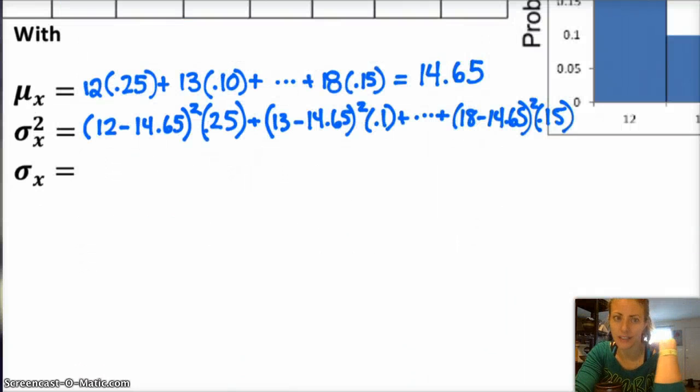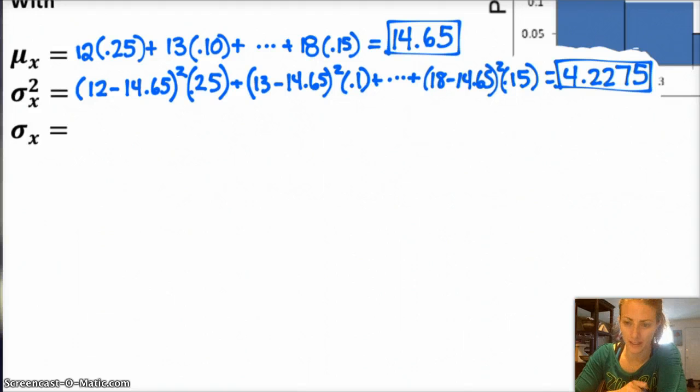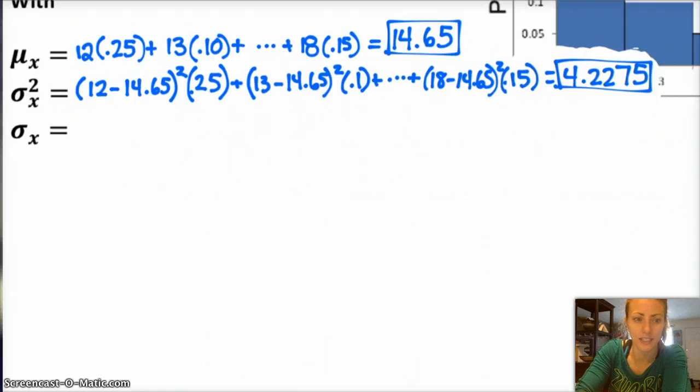Plugging this into the calculator, you got 4.2275 approximately. And then, to get your standard deviation, you just take the square root of that. So, square root of 4.2275 is 2.056. All right, you can also draw the distribution of the random variable x.